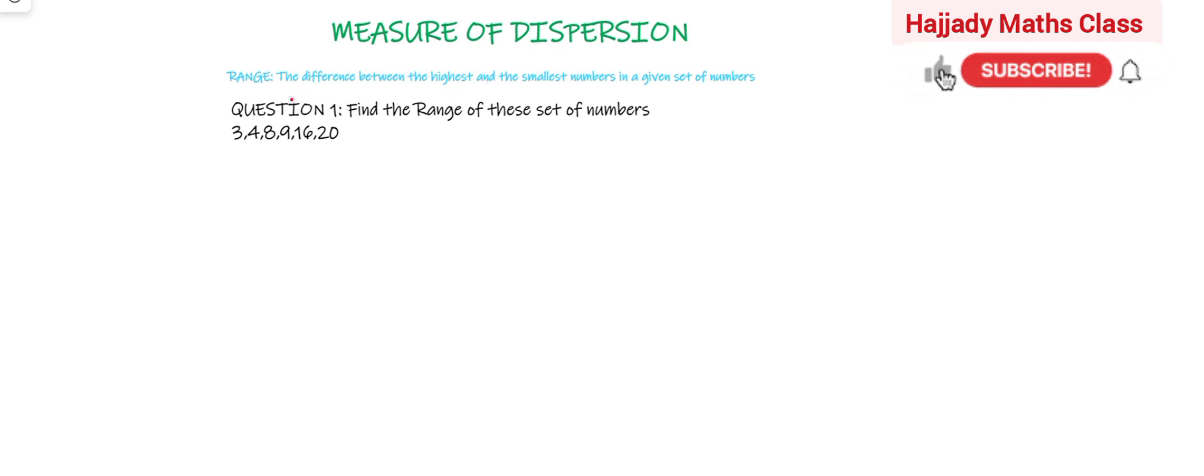The first we are going to define here is the range. From the definition of range, range is the difference between the highest and the smallest numbers in a given set of numbers.